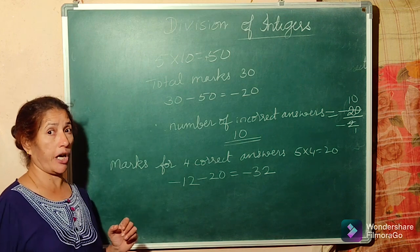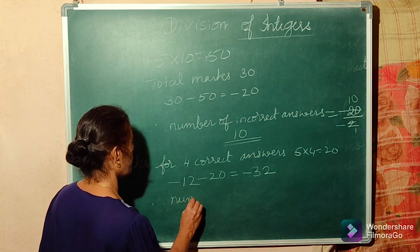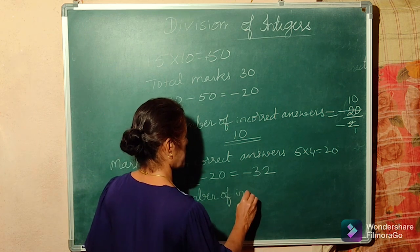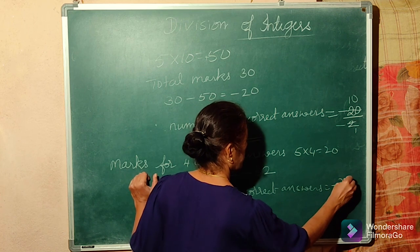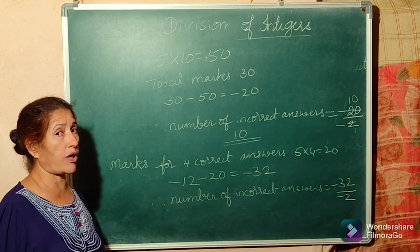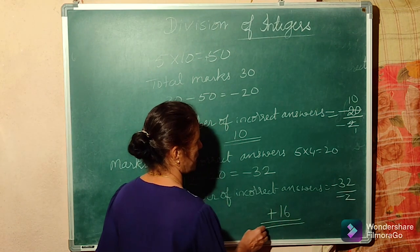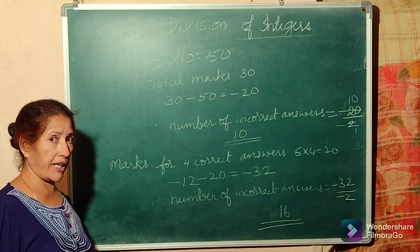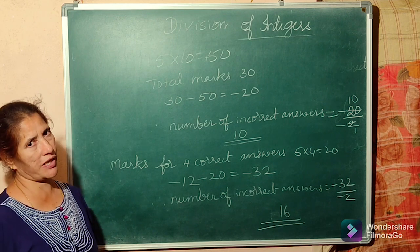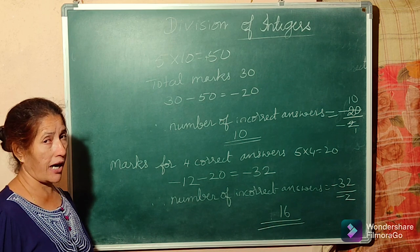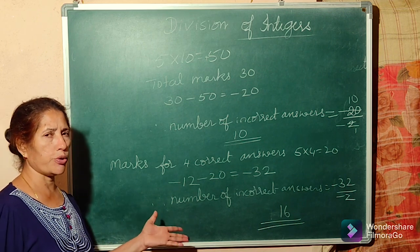Minus 32 was deducted. So the number of incorrect answers equals minus 32 divided by minus 2, because for every incorrect answer the deduction is minus 2. Minus divided by minus is plus, so 32 divided by 2 equals 16. Jai had 16 incorrect answers. Verification: 4 correct gives 20, 16 incorrect gives minus 32, so 20 minus 32 equals minus 12. Correct!